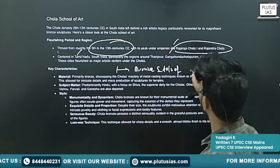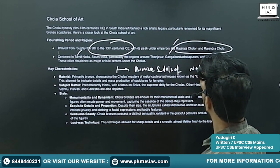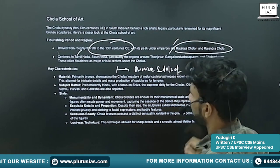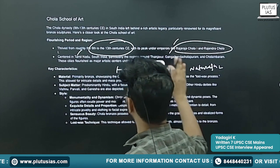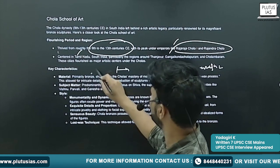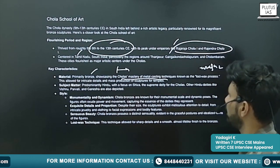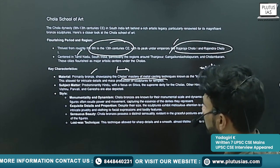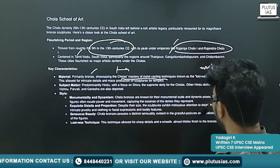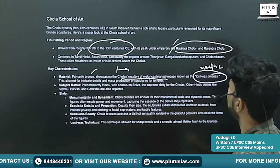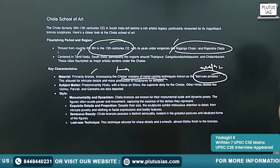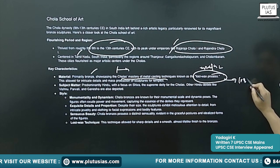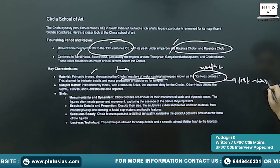Bronze idols of Nataraja. The material used is primarily bronze, showcasing the Chola's mastery of casting techniques. You will see the use of the lost wax process — the lost wax method — in the making of these images of Nataraja.